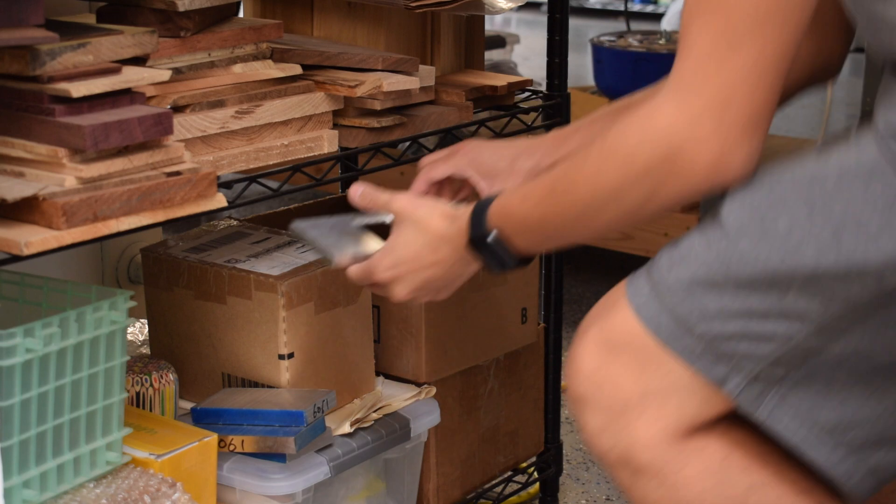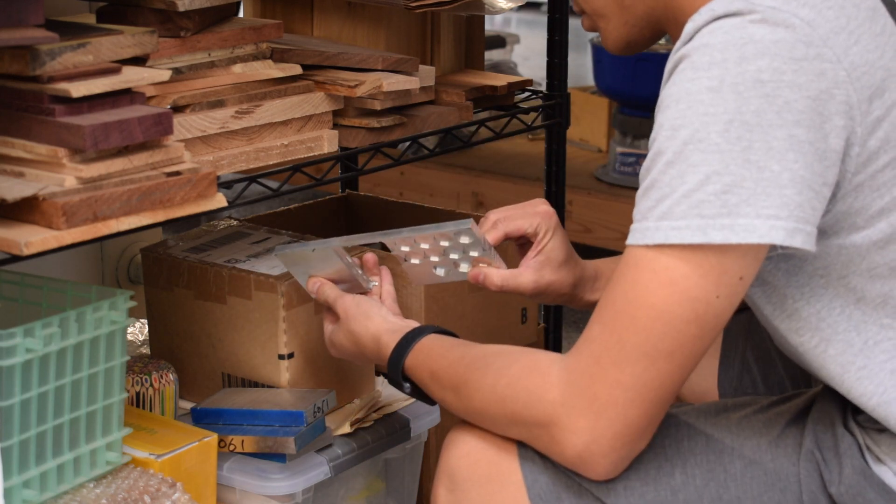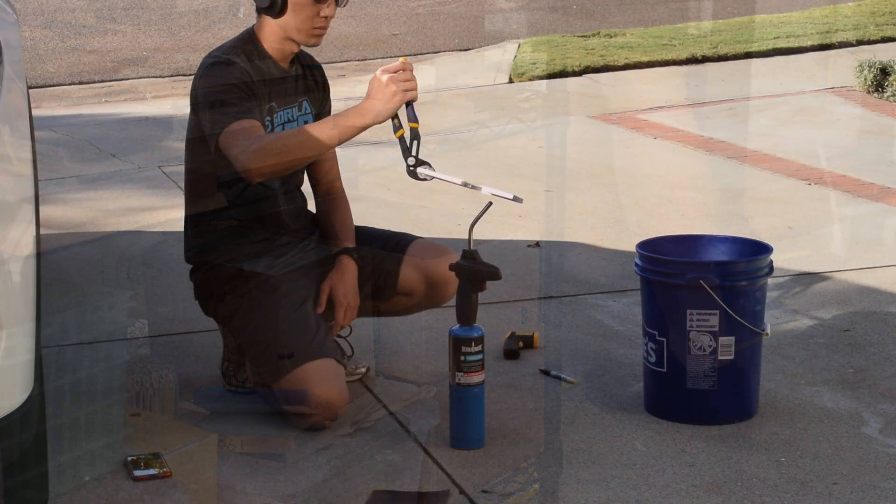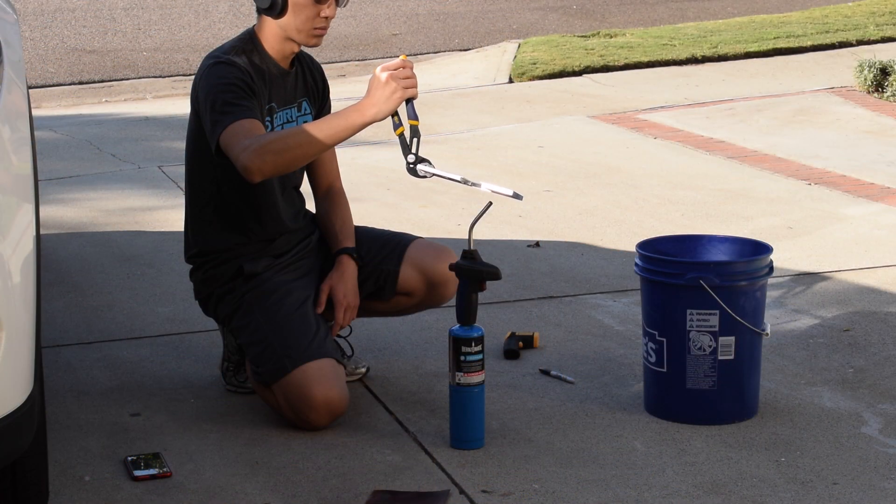Actually, since we have such a conveniently shaped piece of 6061 T6 aluminum, let's do the machining tests on the same piece. We'll anneal one side and preserve the temper of the other side.